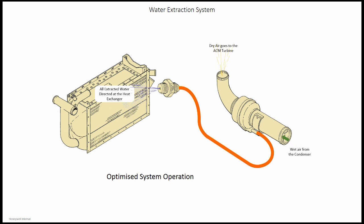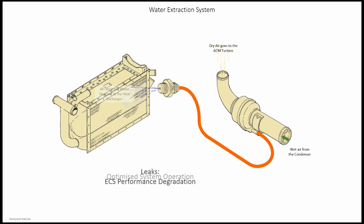Degradation of the water extraction system will have a severe effect on the cooling efficiency of the ECS by reducing the evaporative cooling effect of the water, elevating the exit temperature of the secondary heat exchanger by as much as 10 degrees centigrade. This will cause significant performance drop of the ECS.